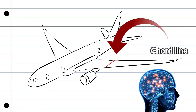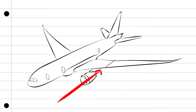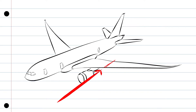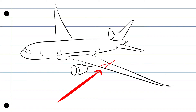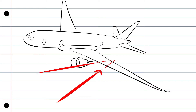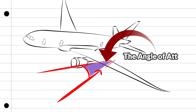Make sure you remember this name. When the airplane changes its attitude, like in the climb or descent for example, the angle between the chord line and the relative airflow changes as well and it creates an angle. This angle is called the angle of attack, or AOA.